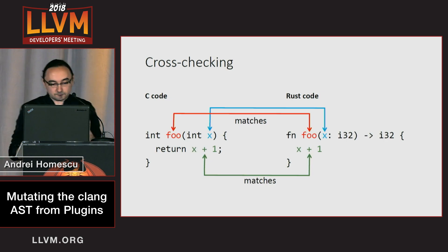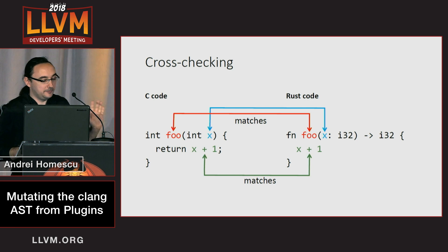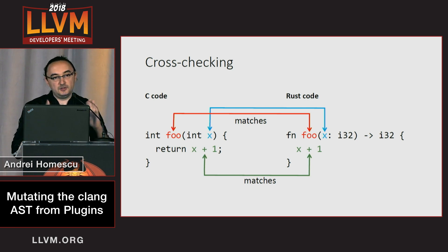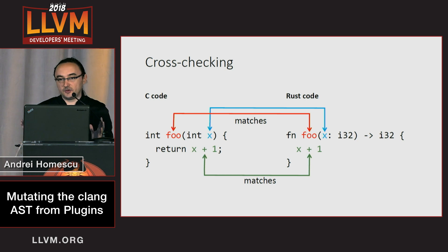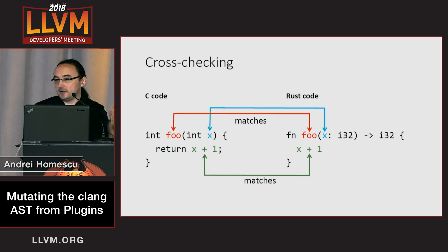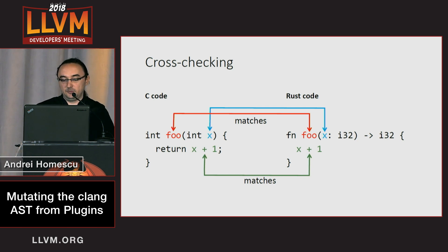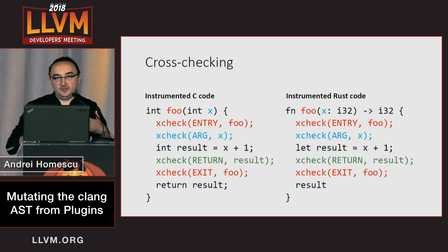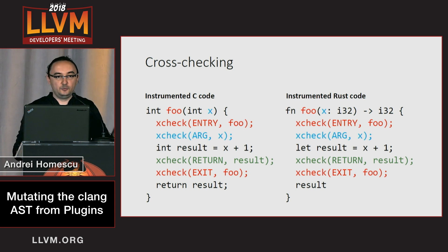Let me show you a bit about what we do with it. Once we transpile a C function into the equivalent Rust code, we want to check if they are identical — if they work the same, or if we introduced any divergence, any differences in how they behave. So to do this, we check at runtime if they behave the same. We want to check if the same functions are getting called with the same arguments and return values, and we do this by inserting instrumentation into both the C and Rust code at compile time, then checking with these xcheck calls.